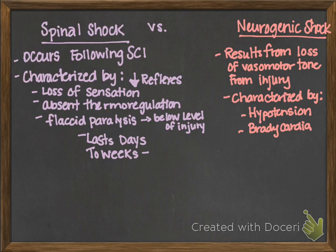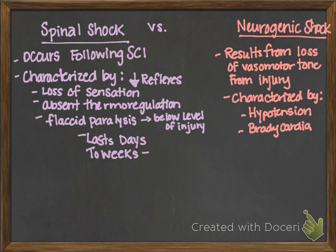Neurogenic shock results from a loss of vasomotor tone from injury. With any shock, your sympathetic nervous system kicks in — think fight or flight: you see a bear and you want to run, and your body shunts blood to all the important organs so that you can be hypervigilant. Same thing with shock — your body is shunting blood to the important organs.